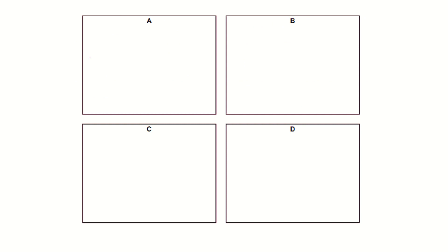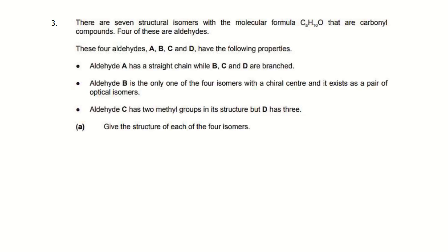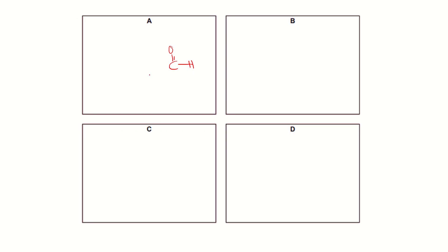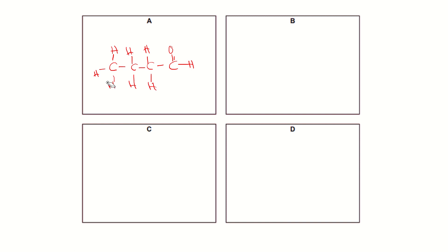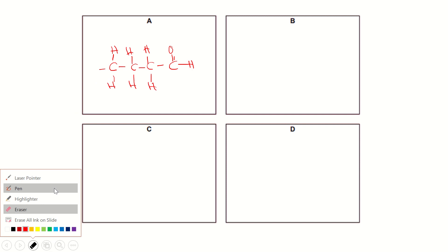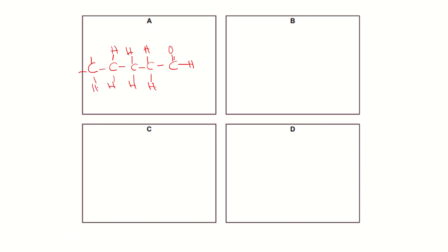For aldehyde A, it is a straight chain aldehyde with a C=O and H (the aldehyde group), plus four more carbons in a straight chain. Total: five carbons. Counting the hydrogens: 1 through 10 — that matches the molecular formula C5H10O. That's aldehyde A.